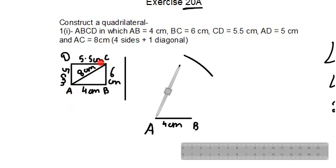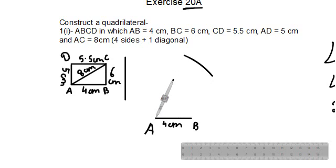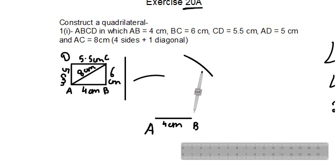Now I will also cut a second arc from point A for AD. The length of AD is 5 cm, so open the compass to 5 cm and cut an arc. This arc will help us locate point D later.